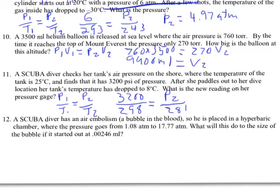And so I have to undo what's being done to P2. It's being divided by 281. So I have to multiply by 281. So I multiply by 281. What I'll get is that P2 equals 3,000 pounds per square inch PSI.